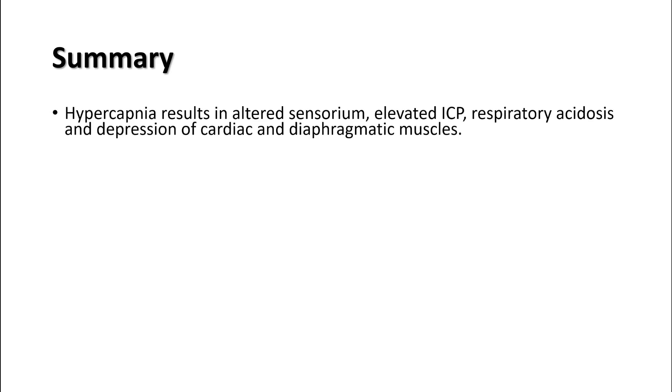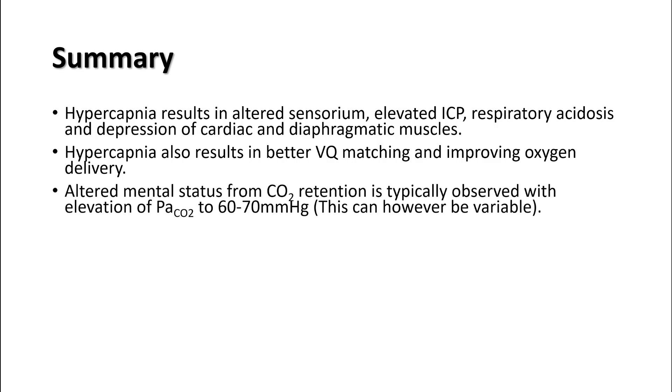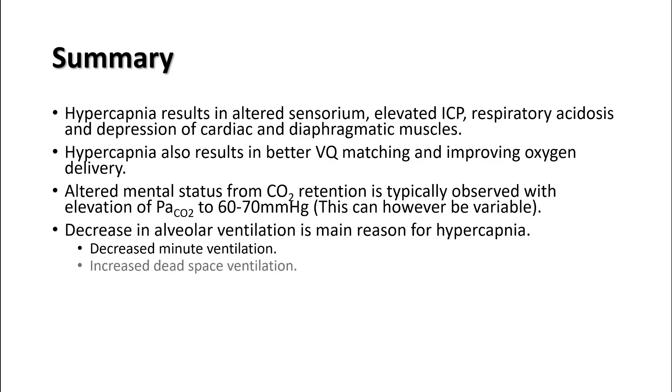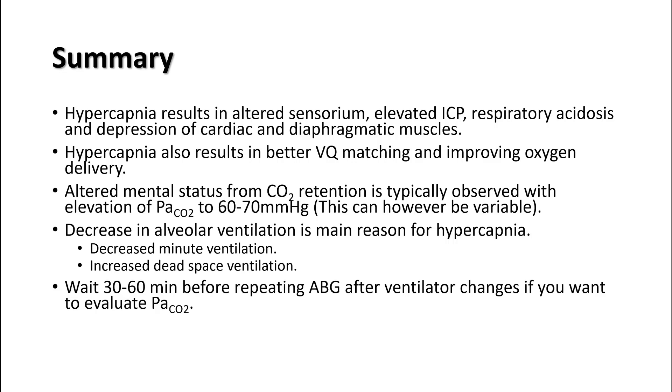In summary, hypercapnia results in altered sensorium, elevated ICP, respiratory acidosis, and depression of cardiac and diaphragmatic muscles. Hypercapnia also results in better VQ matching and improved oxygen delivery. Altered mental status from hypercapnia is typically observed with elevation of PaCO2 up to 60 to 70 millimeters of mercury. However, chronic hypercapnic patients can tolerate much higher PaCO2. Decrease in alveolar ventilation is the main reason for hypercapnia, and this happens because of two reasons: either there is a decrease in minute ventilation or there is an increase in dead space ventilation. Always wait 30 to 60 minutes before repeating an ABG after ventilator changes if you want to evaluate PaCO2, while for PaO2, you can get ABG earlier in 5 to 10 minutes. Thank you. In the next lecture, we will talk about hypercapnia from increased production.